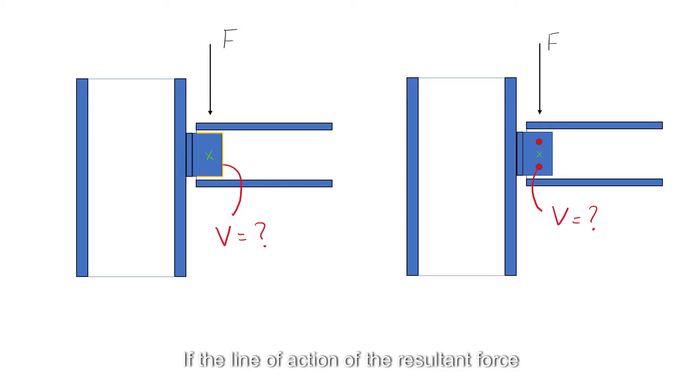If the line of action of the resultant force to be resisted passes through the center of gravity of the connection, each part of the connection is assumed to resist an equal share of the load and the connection is called a simple connection.